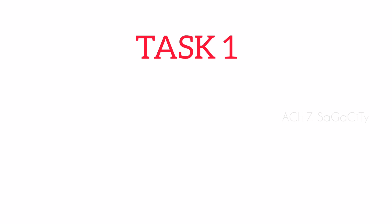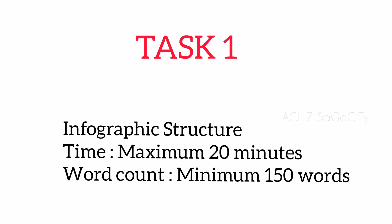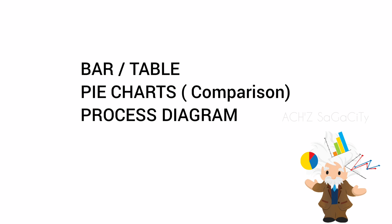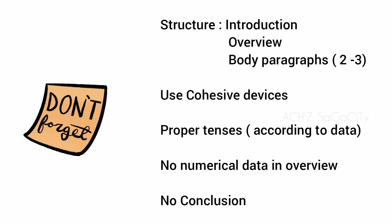Now we will see regarding the writing module for academic first. In Task 1, you will get an infographic structure. You have 20 minutes to prepare one report and you need to write a minimum of 150 words. This time you can expect a bar chart, a table, pie charts — that means combination or comparison charts — and also a process diagram. You should be thorough with these 4 categories. Remember these key points: write introduction, overview, and body paragraphs — 2 to 3 body paragraphs. Use proper cohesive devices — linking words and connectors. Use tenses according to the data. No numerical data in the overview, no conclusion in Task 1. Follow the instruction, make a comparison, and include all relevant data in the body paragraph.